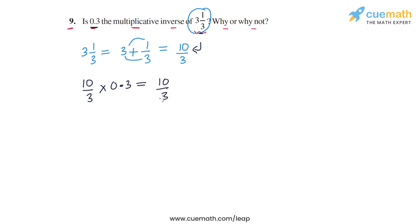So 10 by 3 into 0.3, we can write this as 3 by 10. The decimal number 0.3, we can write this as 3 by 10.